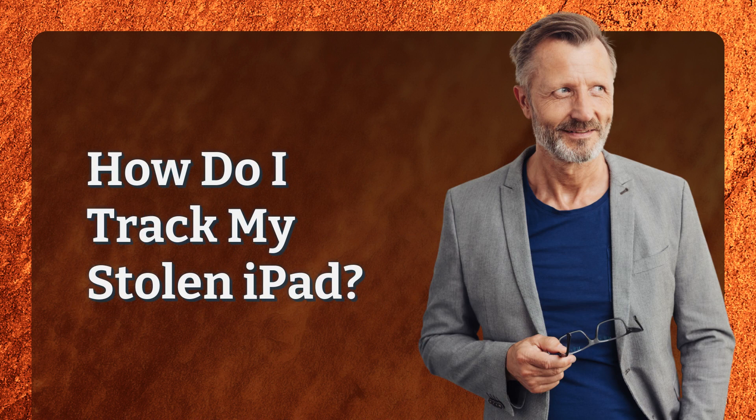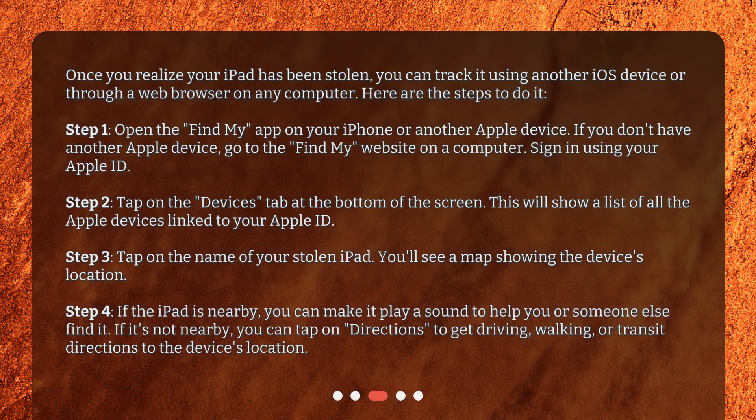How do I track my stolen iPad? Once you realize your iPad has been stolen, you can track it using another iOS device or through a web browser on any computer. Here are the steps to do it. Step 1: Open the Find My app on your iPhone or another Apple device. If you don't have another Apple device, go to the Find My website on a computer. Sign in using your Apple ID. Step 2: Tap on the Devices tab at the bottom of the screen. This will show a list of all the Apple devices linked to your Apple ID.